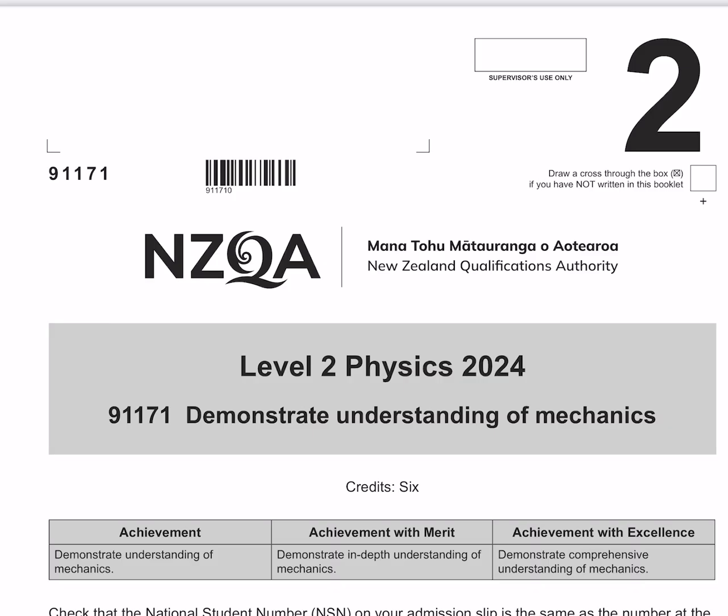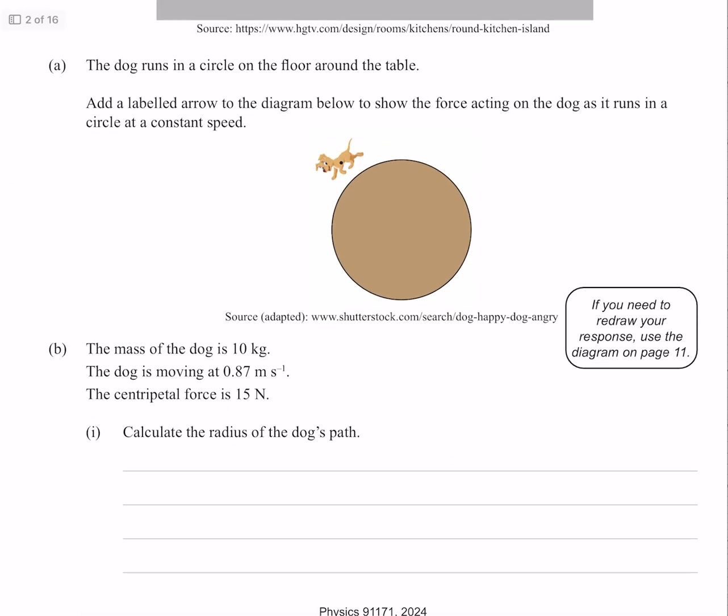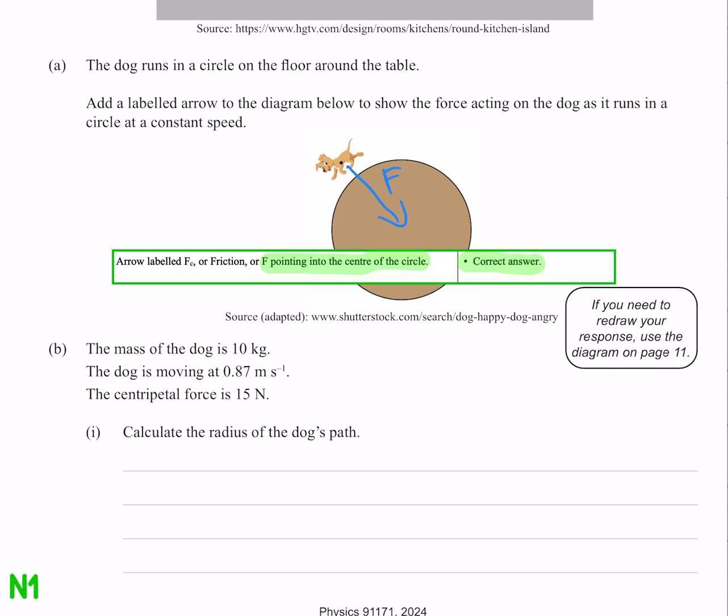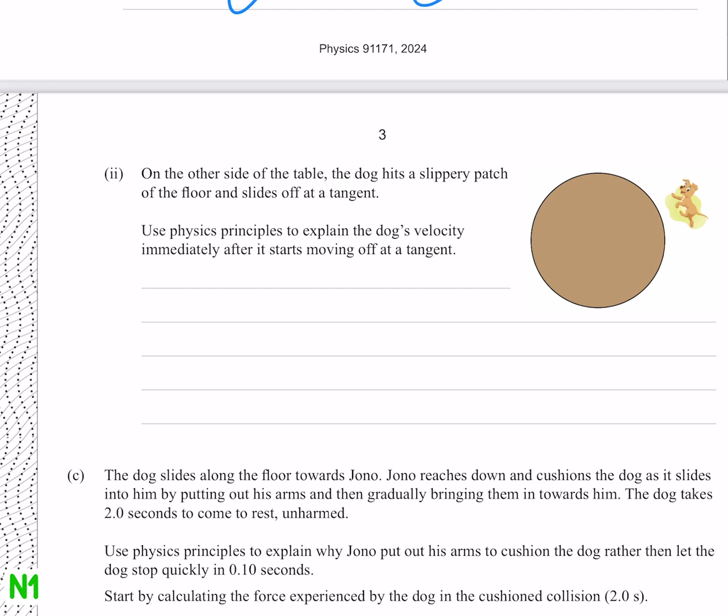Let's look at level 2 mechanics. We have a dog running in a circle. Add a labelled arrow to the diagram below to show the force acting on the dog as it runs in a circle at constant speed. Well that's just going to be centripetal force. On the other side of the table, the dog hits a slippery patch of the floor and slides off at a tangent. Use physics principles to explain the dog's velocity immediately after it starts moving off at a tangent. Well the velocity is just going to be the same.